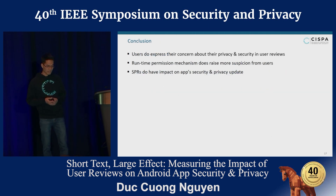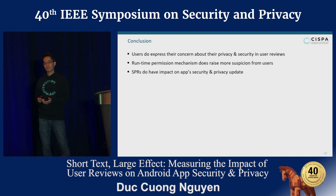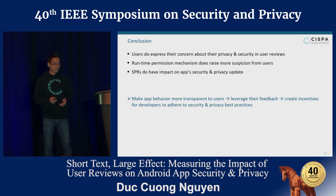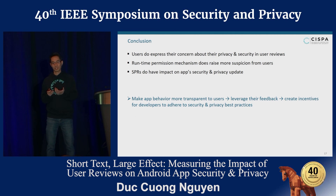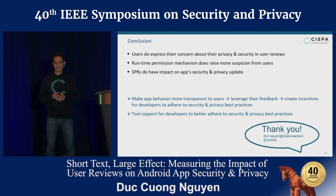To conclude, in this work we found that users do express their concerns about privacy and security in their reviews. Runtime permission mechanism does raise more suspicion from end users. Most importantly, security and privacy-related reviews do have a positive impact on app security and privacy updates. We call for action to make app behavior more transparent to end users, leveraging their feedback to create incentives for developers to adhere to security and privacy best practices, and also to provide better tool support for developers.